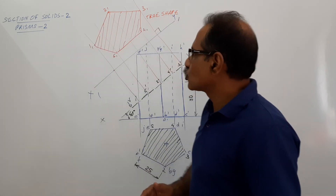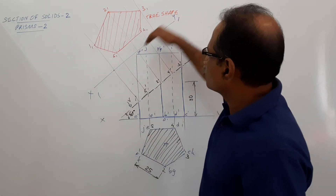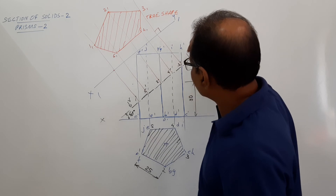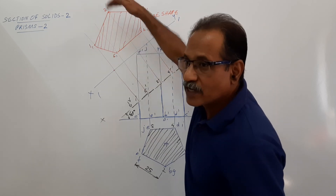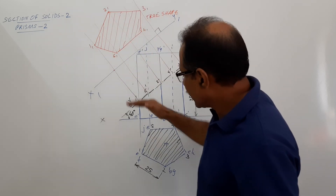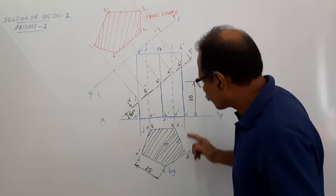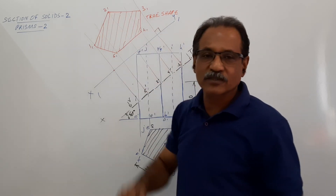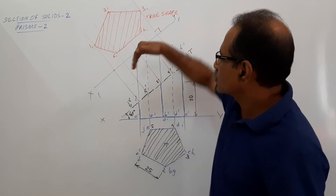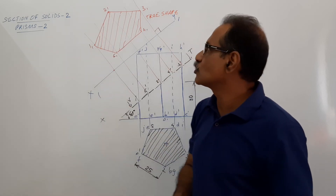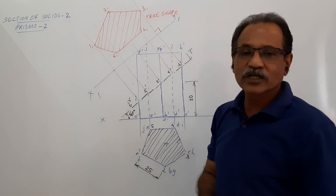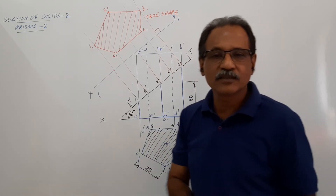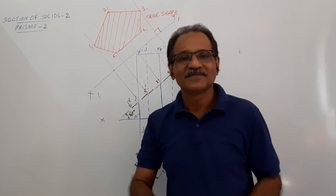So how did you draw the true shape? Draw x1y1, draw projectors through 1-dash, 2-dash, 3-dash, 4-dash, and 5-dash perpendicular to x1y1, then take the distances of points 1, 2, 3, 4, 5 from XY and mark on the respective perpendicular projector. You have got the true shape of the section. I hope you understand. Thank you.